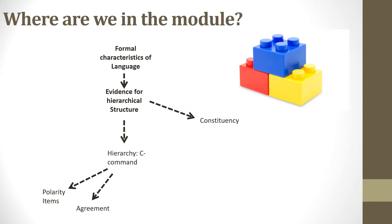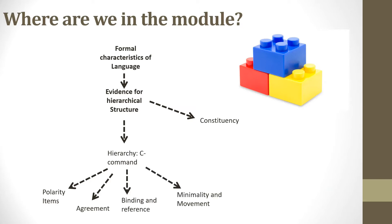Agreement occurs when a grammatical item co-varies based on features of another grammatical item. The marking on one category changes when another category, which might be quite a way distant from it in the structure, also changes.